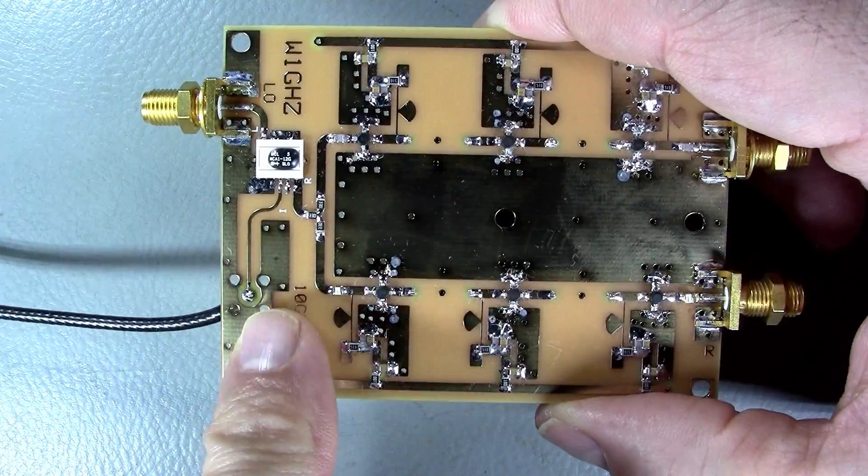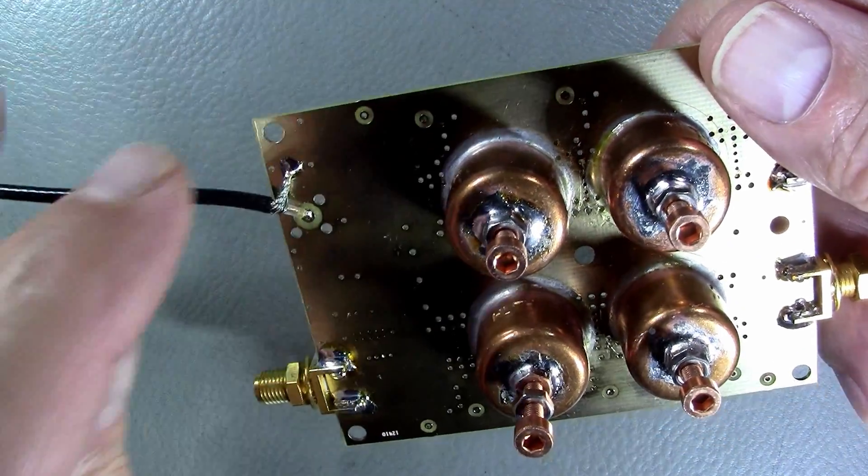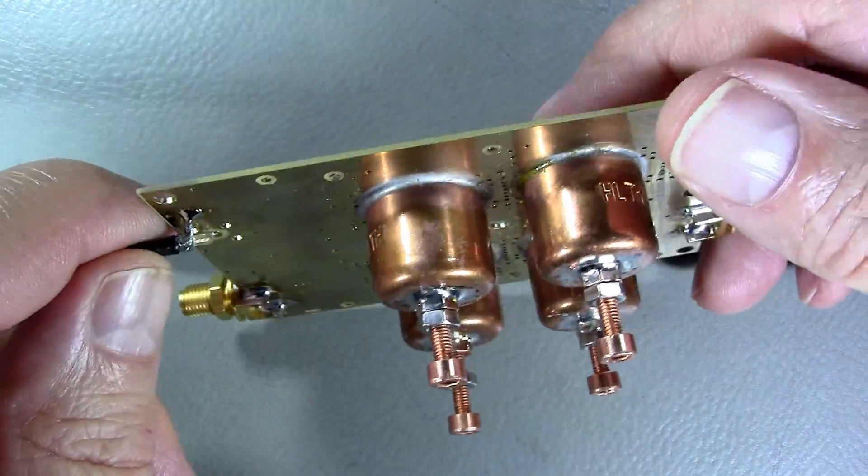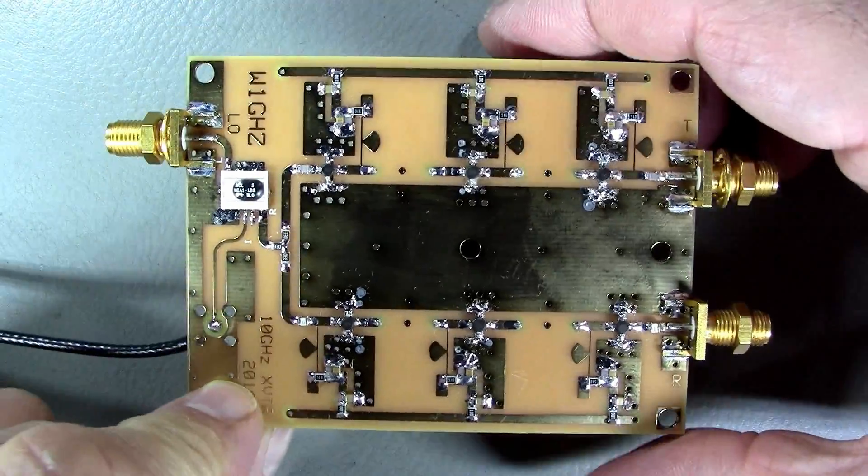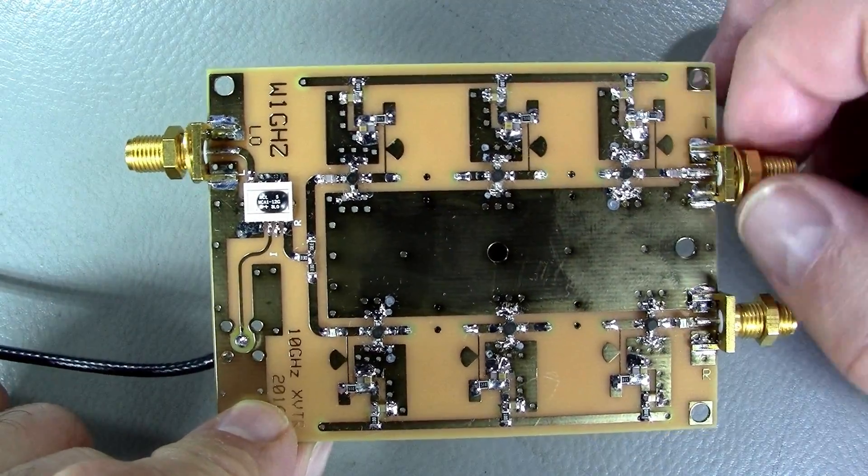I did not install a connector on the two meter 144 megahertz IF port because I'm not sure how I'll interface with the outside world. I just soldered down a little piece of coax cable for the tests. Now I'm ready to test it.